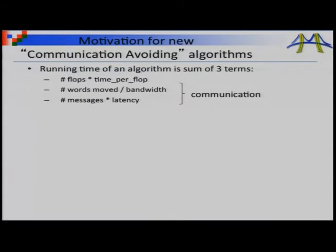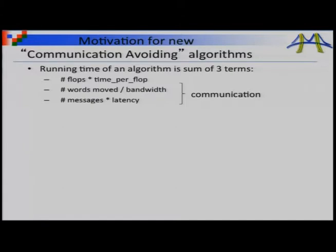Now let me go into the model we'll use to decide if we've done a good job optimizing our code — minimizing communication. I'm going to count three contributions to running time: the number of floating point operations, the number of words moved (between DRAM and cache, or between processors), and the number of messages performed. The total runtime is: number of flops times time per flop, plus number of words moved divided by the bandwidth, plus number of messages times the latency. It's quite accurate for lots of different machines.